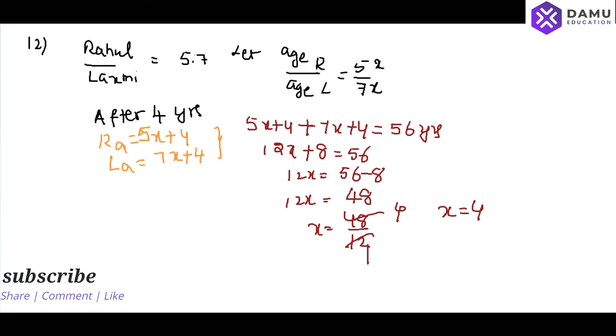So what you can say here is, x we got 4. So their ages 5x, so 5 into 4, 20 years present day for Rahul. Then Lakshmi present day will be 7x, 7 into 4, 28 years.